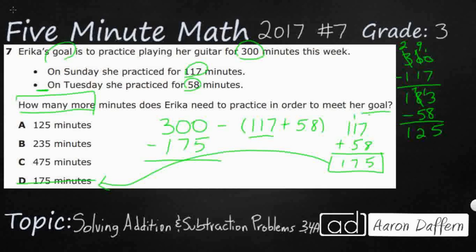Once again, the borrowing becomes very important here. 0 minus 5 doesn't work, so I need to borrow from the tens place — but there's nothing there. I have to go all the way over to the hundreds place: take 100, leaving 2. That 100 becomes 10 tens. Now I've got 10 tens, so I take one away leaving 9, and break that into 10 ones. Now I can subtract, and I get 125. So 125 is going to be my answer. I did it two different ways, and my answer is 125 minutes.